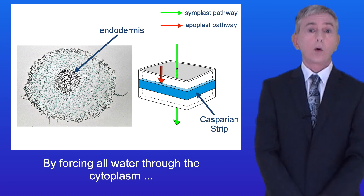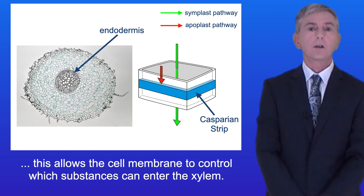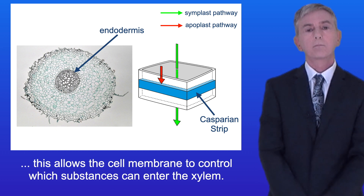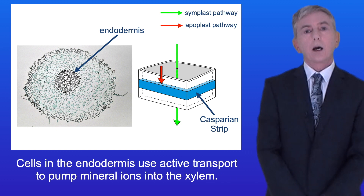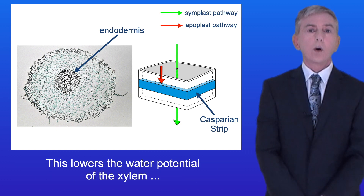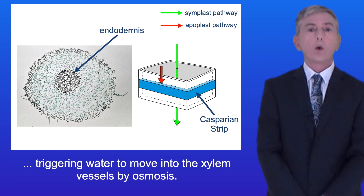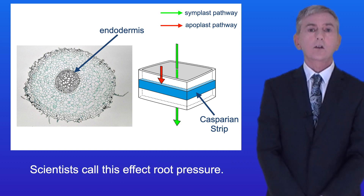By forcing all water through the cytoplasm, this allows the cell membrane to control which substances can enter the xylem. Cells in the endodermis use active transport to pump mineral ions into the xylem. This lowers the water potential of the xylem, triggering water to move into the xylem vessels by osmosis. Scientists call this effect root pressure.